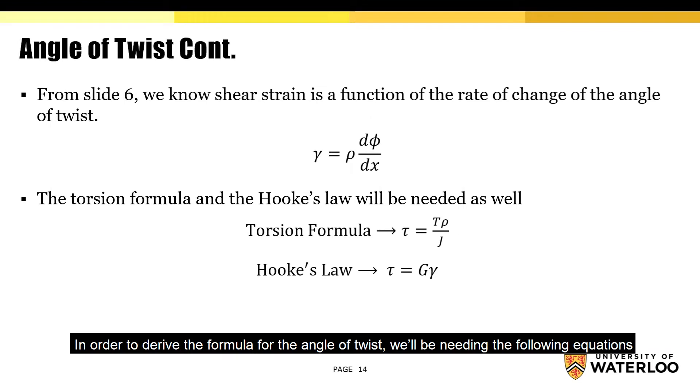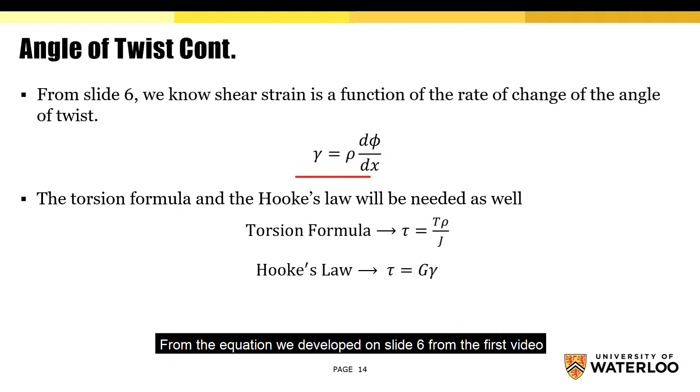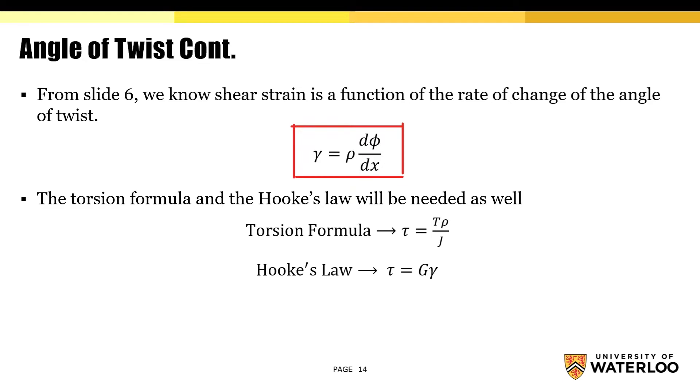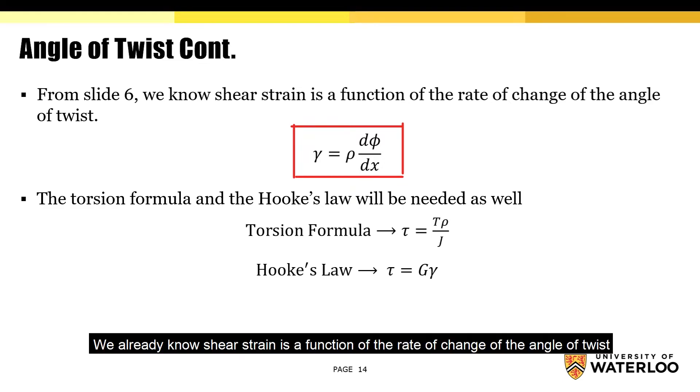In order to derive the formula for the angle of twist, we'll be needing the following equations. From the equation we developed on slide 6 from the first video on torsional deformation of a circular shaft, we already know shear strain is a function of the rate of change of the angle of twist.